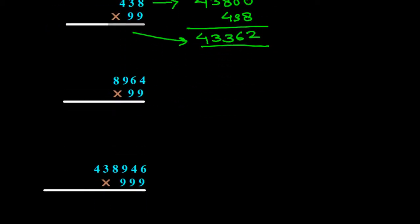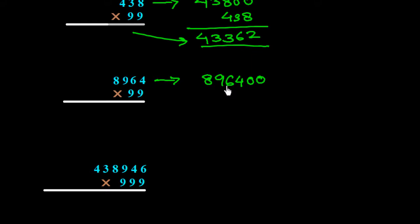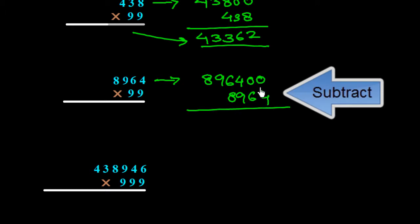Similarly, here we have 8964 multiplied by 99. In the 9-series there are only 2 digits, so we add two zeros to the right side: 896400. Now we subtract 8964 from this. So: 10 minus 4 is 6, 9 minus 6 is 3, 13 minus 9 is 4, 15 minus 8 is 7, then 8 and 8 — giving the answer 887436.